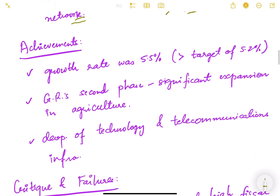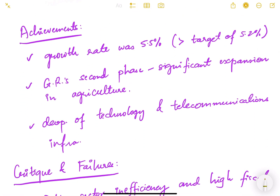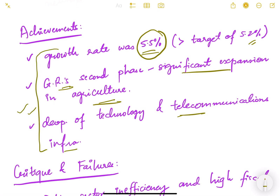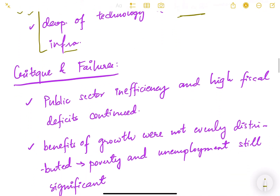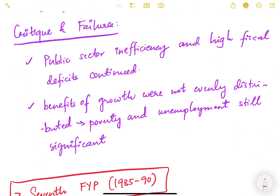Now let us look at the achievements. Our growth rate increased to 5.5 percent, which was more than the target of 5.2 percent — this was the average growth rate over these five years. The green revolution's second phase also started during this period, with significant expansion in agriculture. There was also development of technology and telecommunication infrastructure during this time.